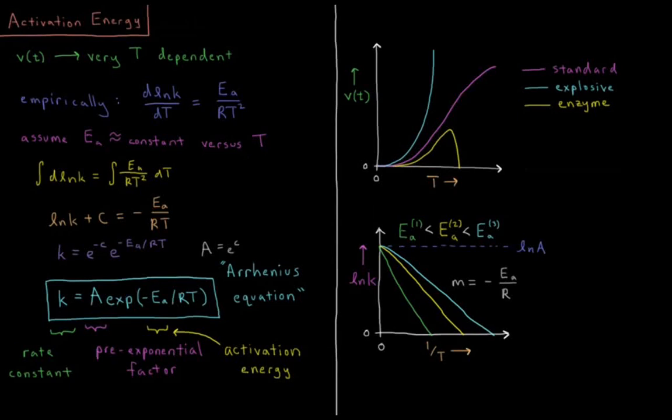This video will discuss activation energy in chemical kinetics. For many reactions, our reaction rate is highly dependent on temperature. Empirically what's been discovered is that the change in the natural log of the rate constant with respect to temperature is equal to a quantity Ea divided by the gas constant times temperature squared, where this quantity Ea is what is called the activation energy.